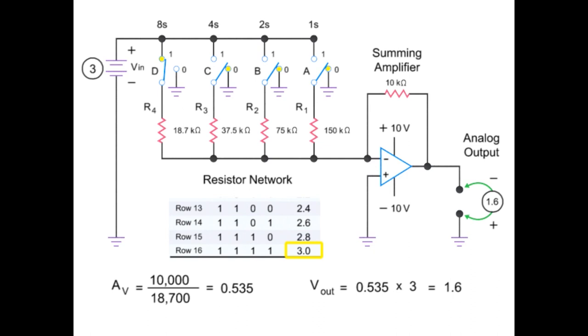Finally, we can generate an output of 3 volts by inputting binary code 1111.